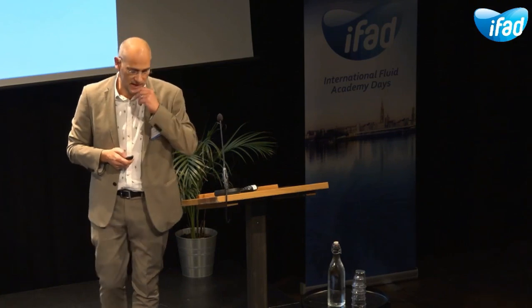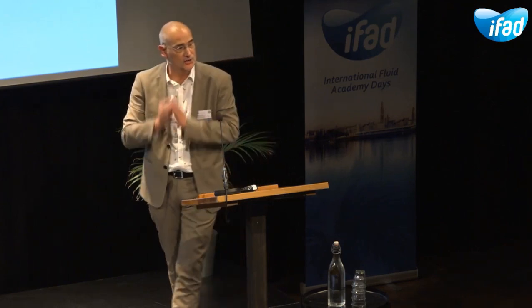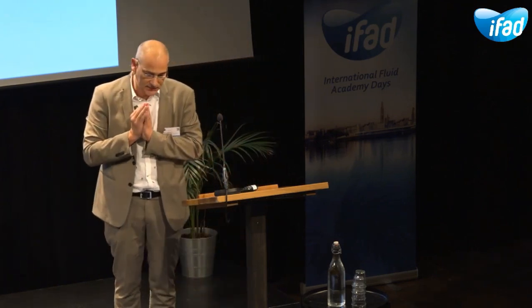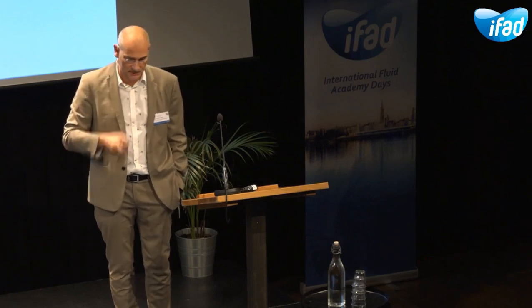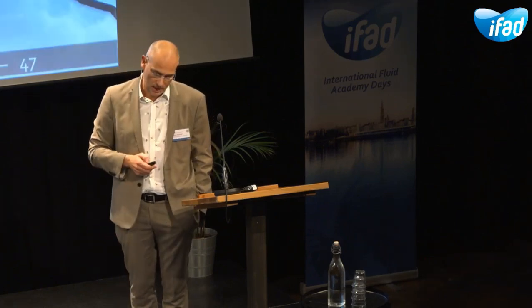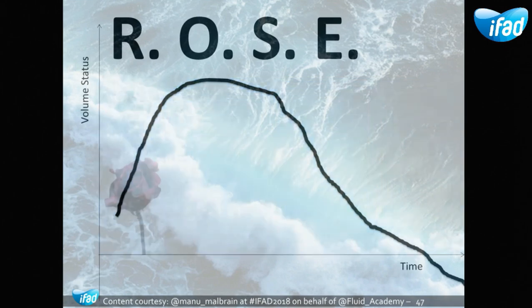This brings us to the four phases of fluid therapy. With the blossoming of the rose, we give fluids to resuscitate the patient, to optimize organ function, to stabilize the patient, and then at some point we need to de-escalate and evacuate the excess fluids. Many patients will have a polyuric phase, but some entering a global increased permeability syndrome may need active removal. The first hit: fluid balance must be positive. The second hit is optimization, the third hit is the polyuric phase where fluid balance may become negative. We must avoid a fourth hit, which is hypoperfusion.